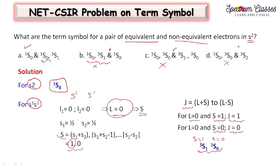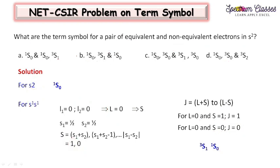So these two terms — 3S1 and 1S0 — are the answer for the non-equivalent case. If asked what is the difference between the equivalent and non-equivalent answers, all three terms are the same but the difference lies in the position of the word AND — representing equivalent AND non-equivalent electrons. You must be careful about all such distinctions.